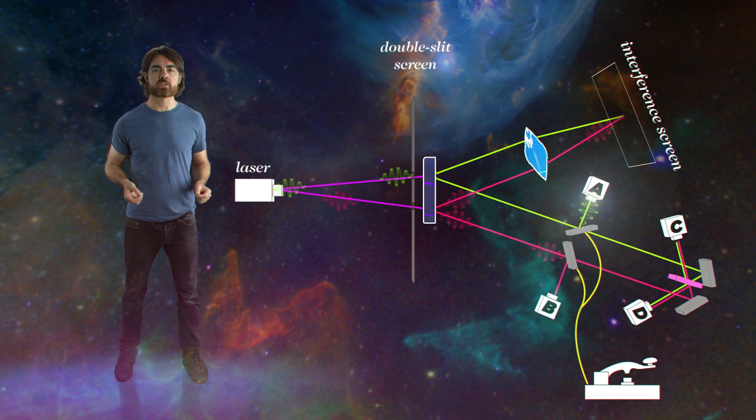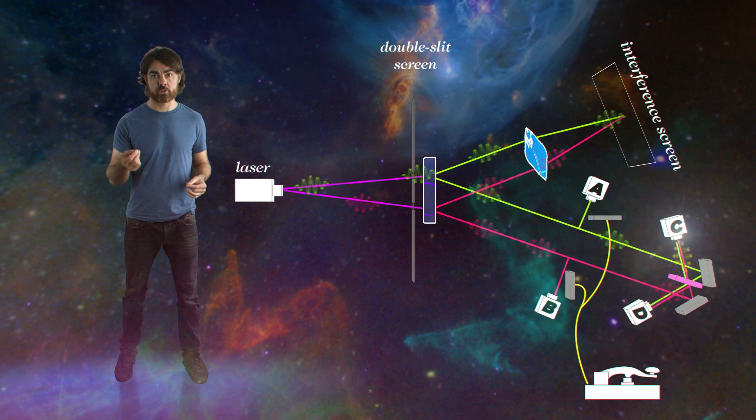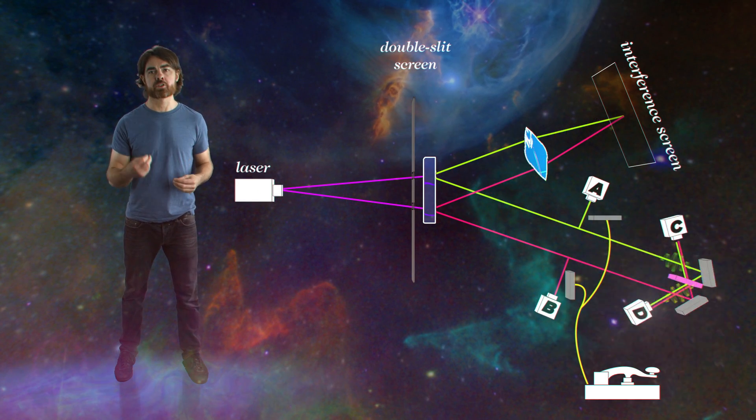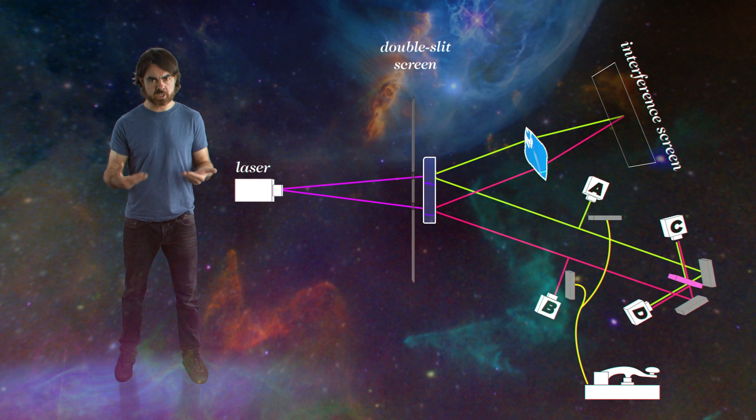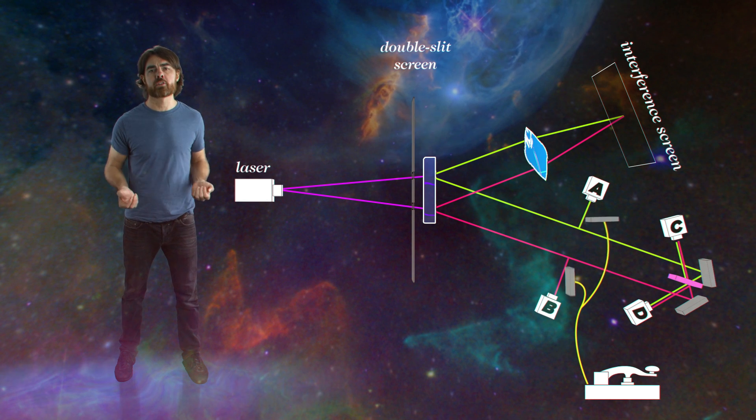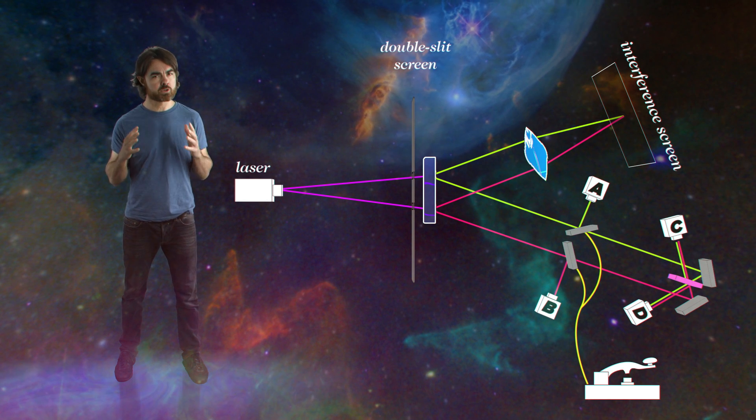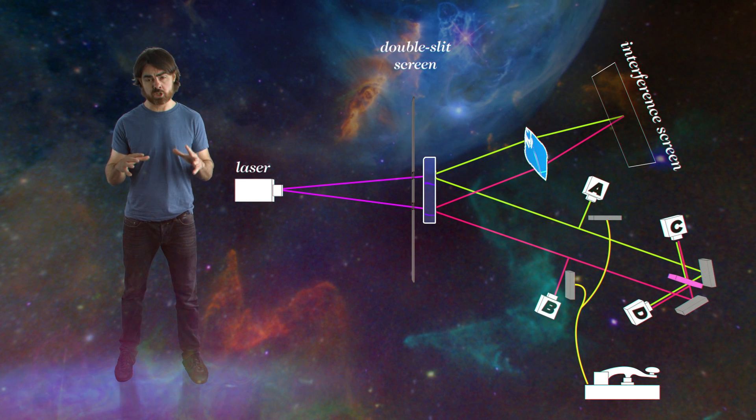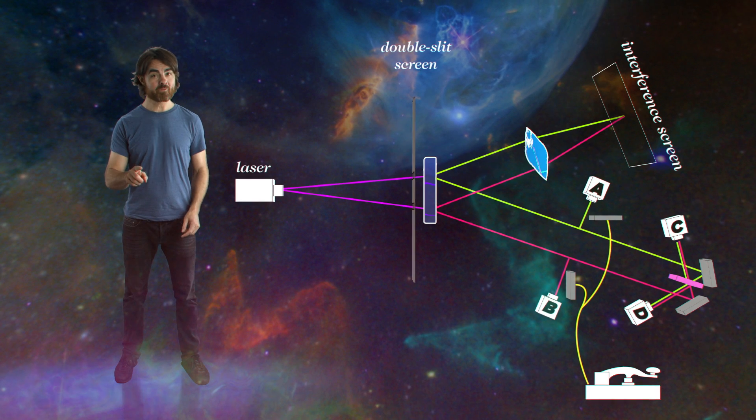But activate the switch and the mirrors move out of the way. Photons travel through to the eraser section, resulting in an interference pattern at the screen. We make the decision of whether to know the path of the original photon or whether to erase that knowledge. This conscious choice should be no different to the random decision of the beam splitter.